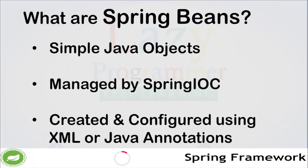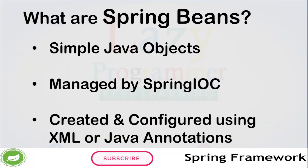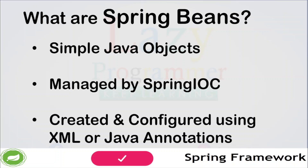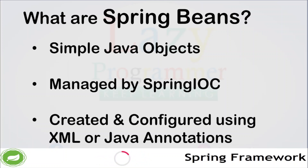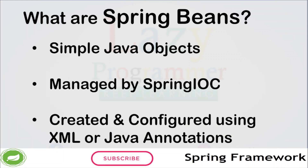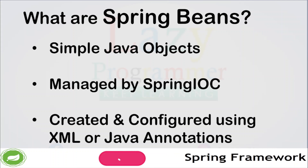First, let's define what Spring Beans are. Spring Beans are simply the Java objects that are managed by the Spring IOC container. These objects are created and configured using XML configuration, Java annotations, or Java code as well.